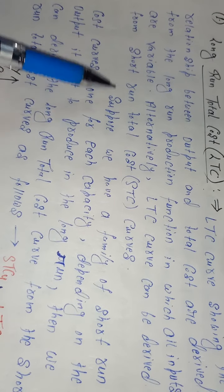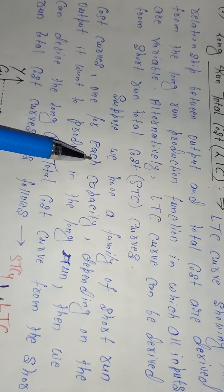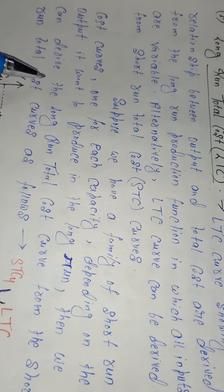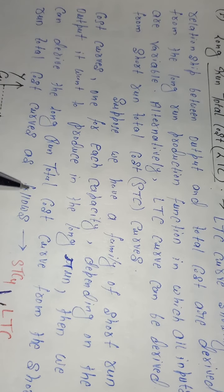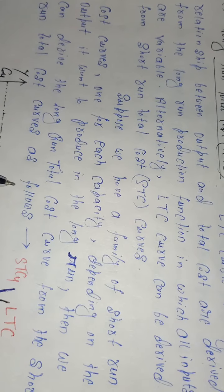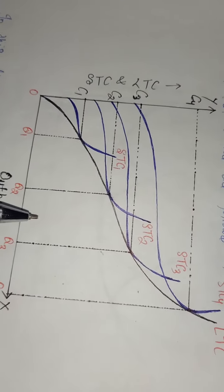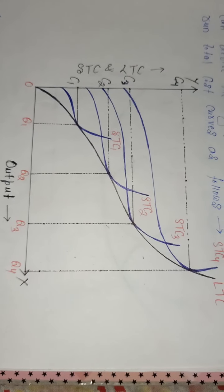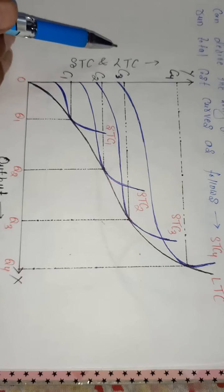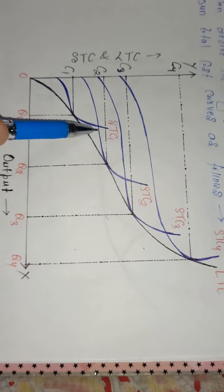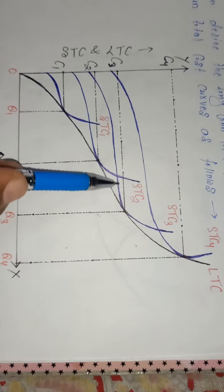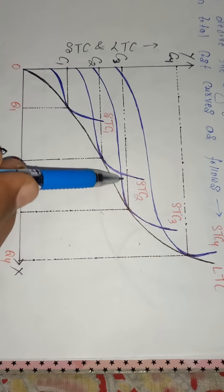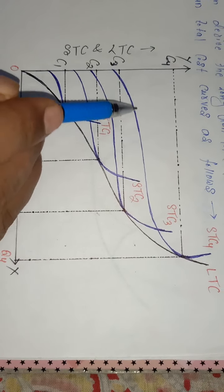Alternatively, the LTC curve can be derived from short run total cost curves. Suppose we have a family of short run cost curves — one for each capacity — depending on the output the firm wants to produce in the long run. We can then derive the long run total cost curve from these short run total cost curves. Looking at the graph: the x-axis shows output and the y-axis shows short run total cost and long run total cost. We have the short run total cost curves for plant 1, plant 2, plant 3, and plant 4.